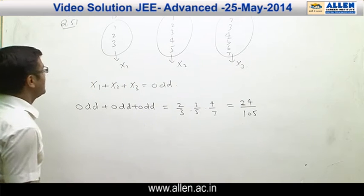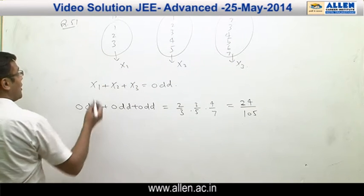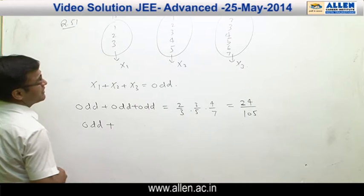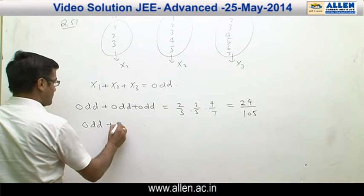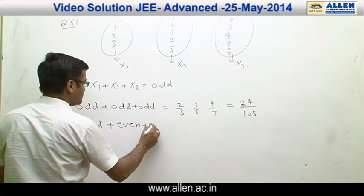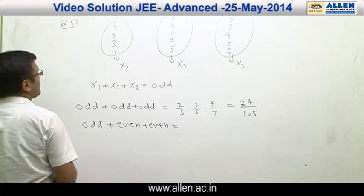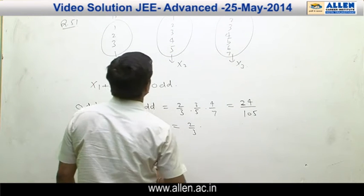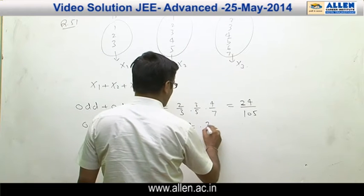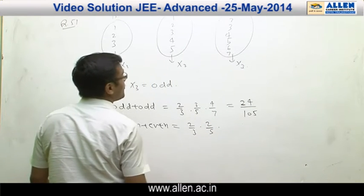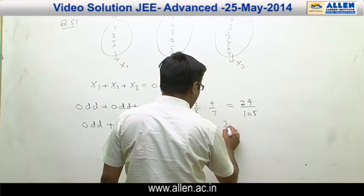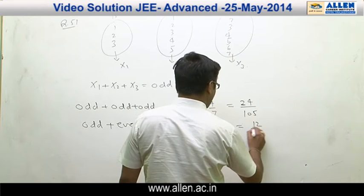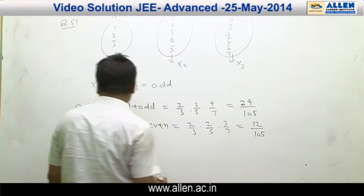Second possibility: when we take an odd number from box B1 and even numbers from box B2 and B3. Odd number from box B1 is 2/3, odd from box B2 the probability is 2/5, and even from box B3 the probability is 3/7. The probability in this case becomes 12/105.